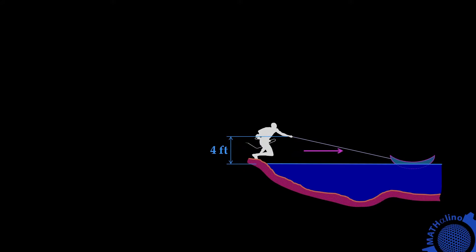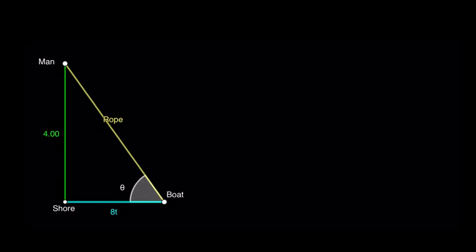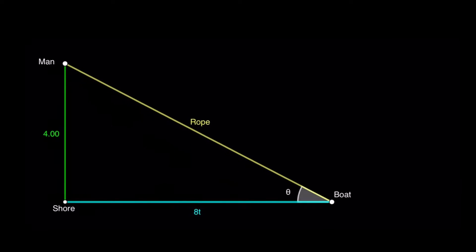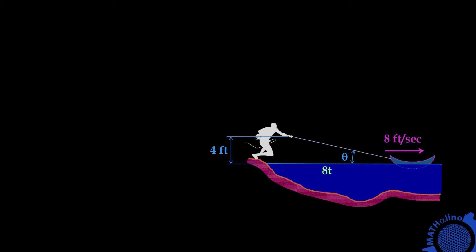Let us go to example number 2. We have a boat that is pushed off from the shore at the rate of 8 feet per second, and the hands of the man holding the rope tied to the boat is 4 feet from the water level. The distance traveled by the boat is velocity times time — the velocity is 8, so the distance is 8t. We are required to find how fast the angle of elevation of the rope is decreasing after 1 second. We have a short animation that will show us this angle of elevation of the rope decreasing.